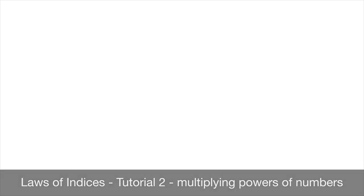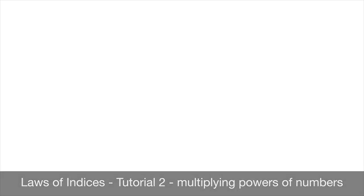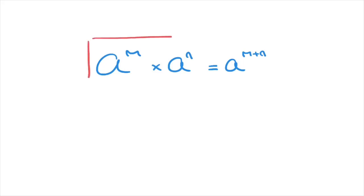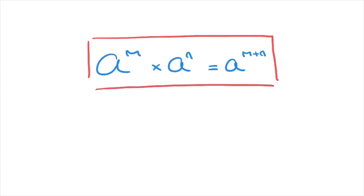We now learn about the rule for multiplication of powers of numbers. If we have a raised to the power of m times a raised to the power of n, then that will equal to a to the power of m plus n. I'll go ahead and box that result, and you'll definitely want to make a note of this if you don't know this already.